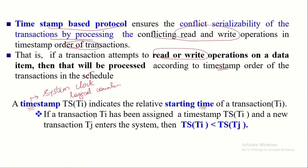If a transaction has already been assigned a timestamp and a new transaction enters into the system — assume that T1 has already been assigned a timestamp and newly transaction T2 entered into the system — then obviously the timestamp of T2 will be greater than that of T1. For example, assume that T1 entered into the system at 9:01 AM and T2 entered at 9:02. The transaction which entered recently will take the greater timestamp.